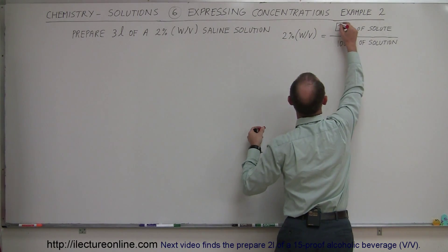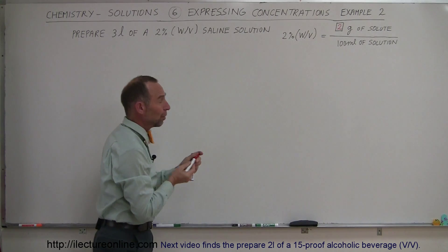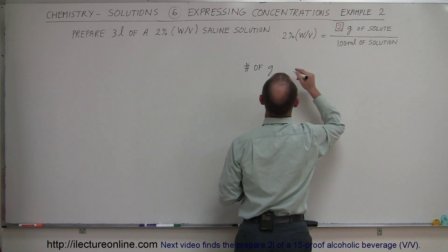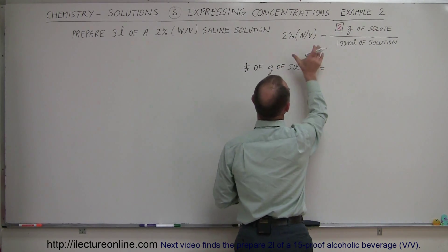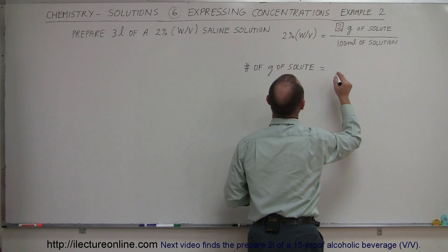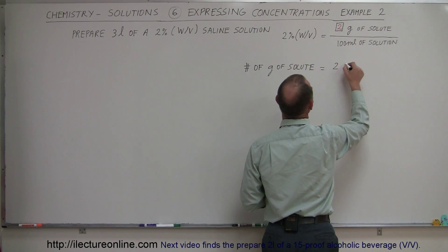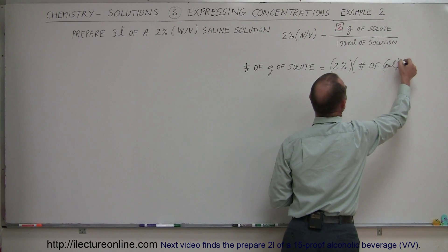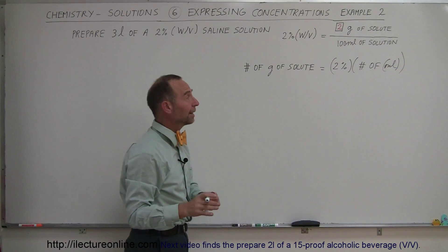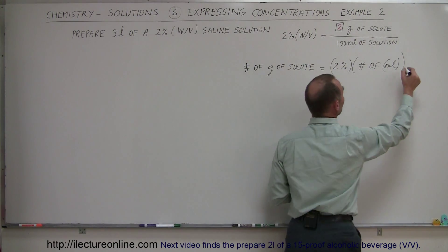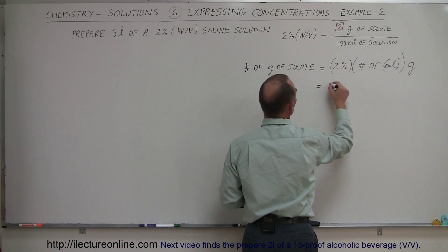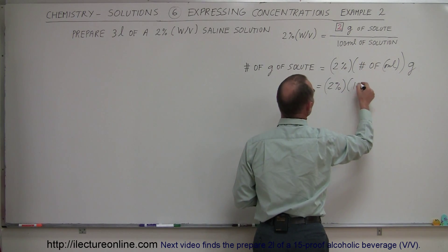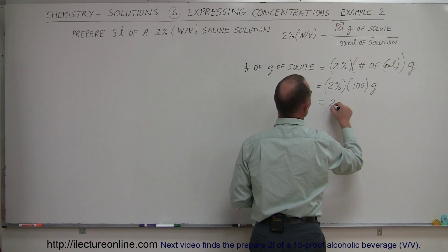Now if you don't see that right away, not a problem because what we simply do is we can simply write it like this. That the number of grams of the solute, which is the numerator right there, equals the percent multiplied by the number of milliliters. So it is equal to 2% times the number of milliliters. And we have to realize that the end result will be grams. And so this is equal to 2% times 100, and that equals 2 grams.